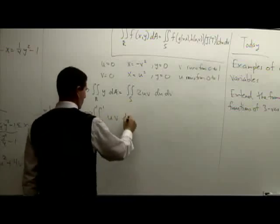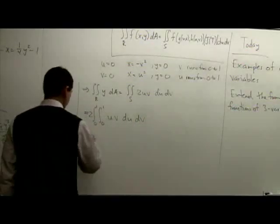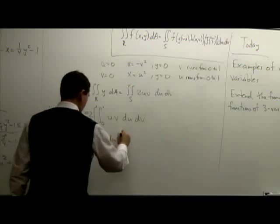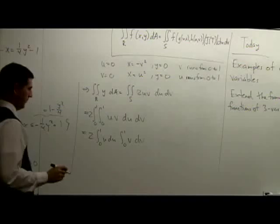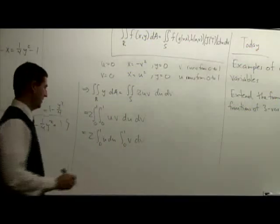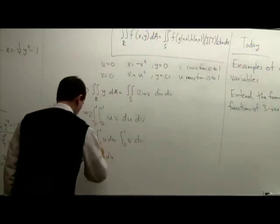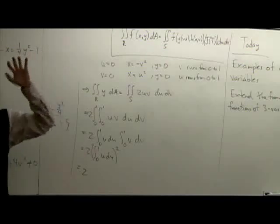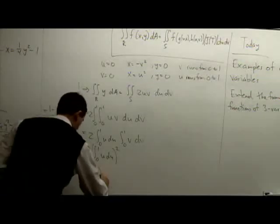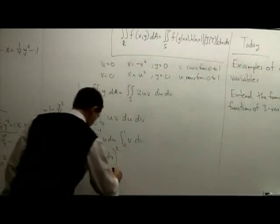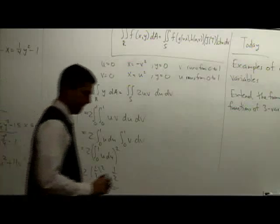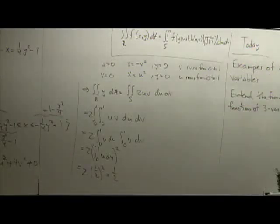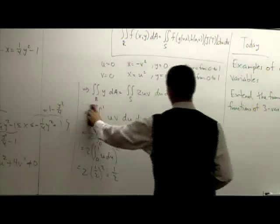We can split the integral by Fubini: 2 · (∫₀¹ u du) · (∫₀¹ v dv). These two integrals are the same, so it's 2 · (∫₀¹ u du)². That equals 2 · (1/2)² = 2 · 1/4 = 1/2. Wait — we forgot the Jacobian! We have to go back and include the factor 4u² + 4v².